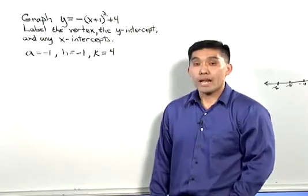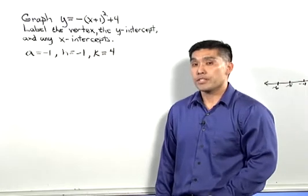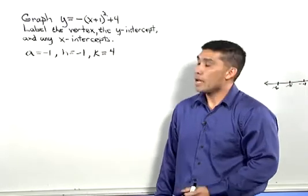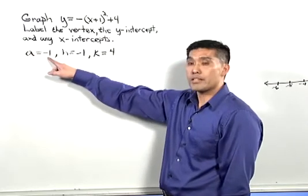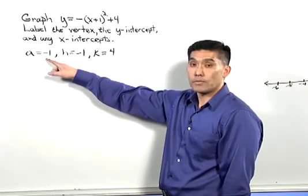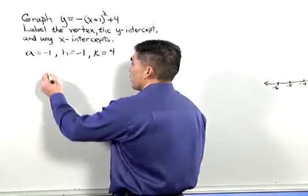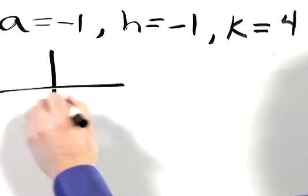Since it is a quadratic function, I know that the graph is going to be a parabola. And more importantly, since a is negative 1, I know that it's a parabola opening downward. So the general shape of this curve will look like this.